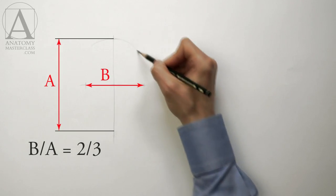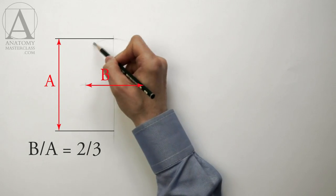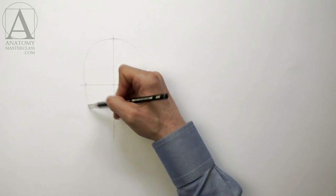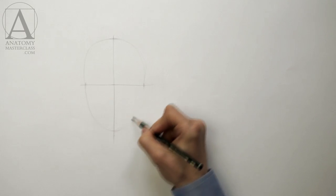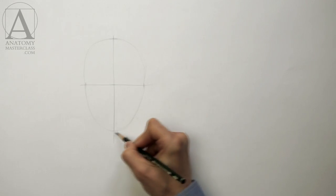The ratio of width to height is approximately two-thirds. Now, we draw an oval that goes around these four dots. This oval will outline the contour of the head.